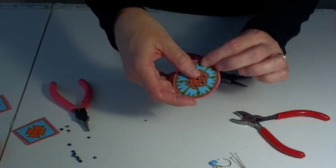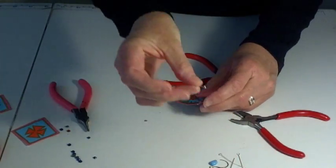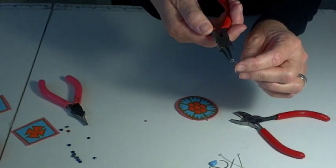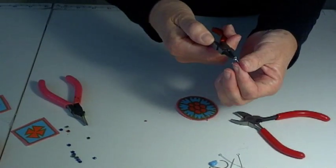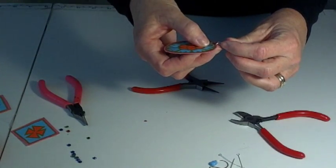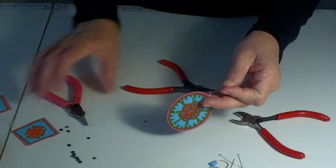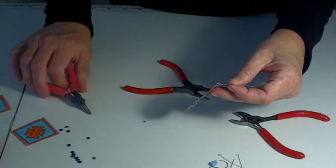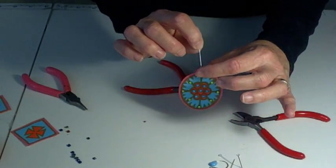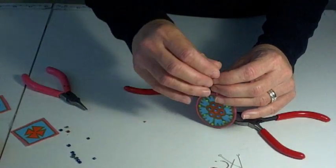Okay, and then once you get it closed you have your jump ring on there. And the next thing you're going to do is you're going to add one of these eye pins. And these come with a pre-existing loop so you just open that up, go ahead and put that on there and close it. Okay, so now you have this piece, your jump ring and your eye pin, and then you're going to add your bead.